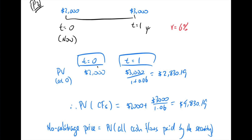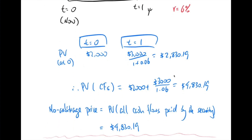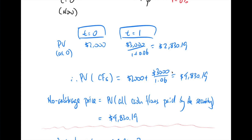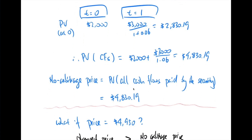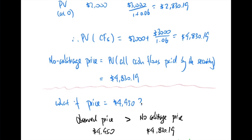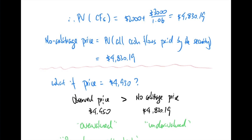The present value of cash flows is $2,000 plus $2,830.19, which gives $4,830.19. This is the no-arbitrage price. The question then asks: what if the market price is not $4,830.19 but instead $4,950? That means the observed market price of $4,950 is greater than the no-arbitrage price of $4,830.19. From a financial point of view, the market price is overvalued, while the no-arbitrage price represents the fair value.